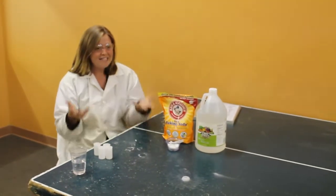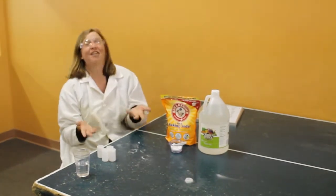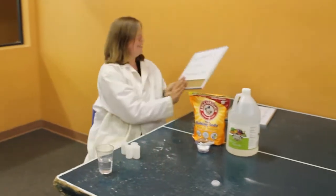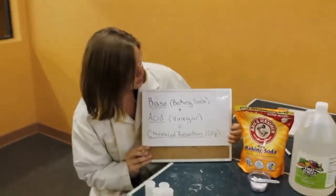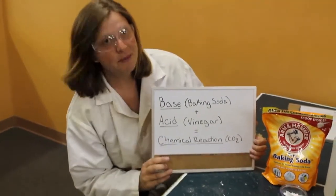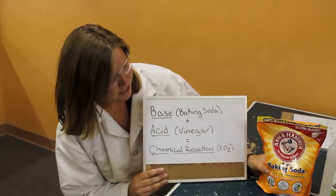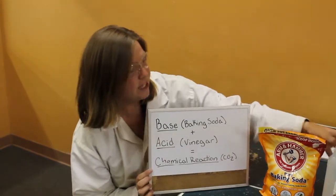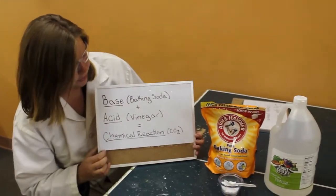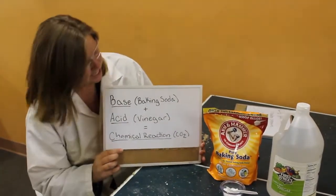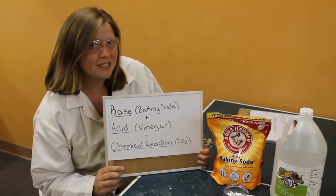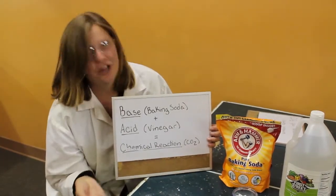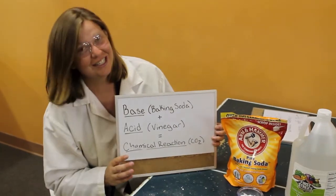So why did that crazy thing happen just now that's dripping down from my ceiling? It has to do with acids and bases. So a base on the pH scale something like a base would be baking soda. Baking soda when it's mixed with an acid like vinegar together has a chemical reaction. In this case it created that CO2 or carbon dioxide. When acids and bases mixed together they neutralize each other causing a chemical reaction.